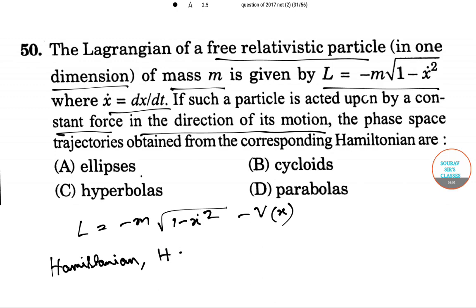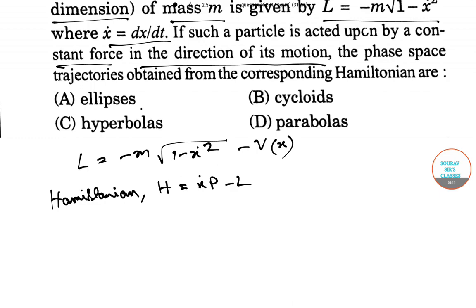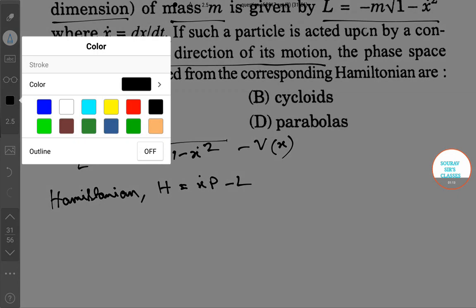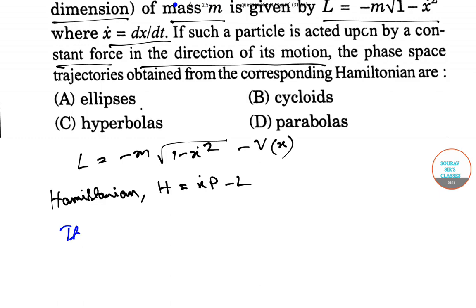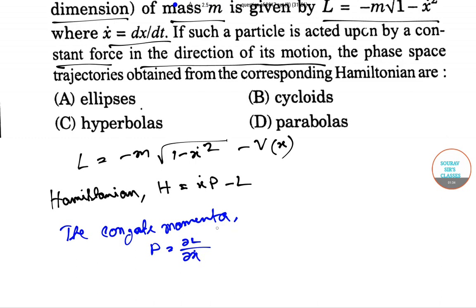The Hamiltonian for the system is H equals x-dot P minus L. The conjugate momenta can be written as P equals del L over del x-dot. So this equals M x-dot divided by root over of (1 minus x-dot squared).